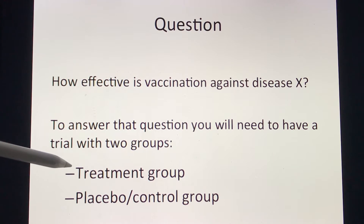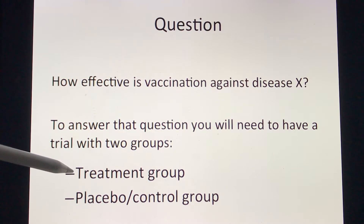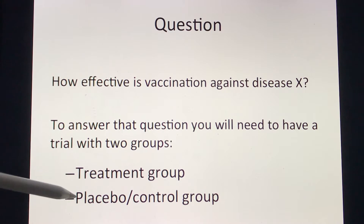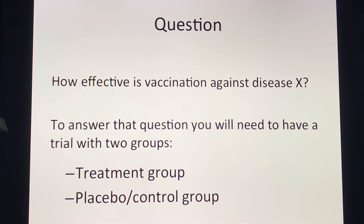One would be a treatment group — the group that receives the vaccination — and the second group would be the placebo or the control group, the group that does not receive the vaccination.